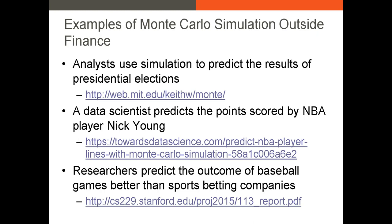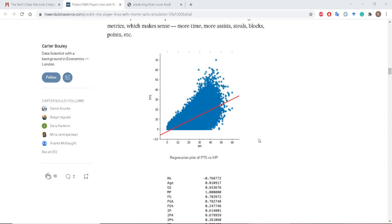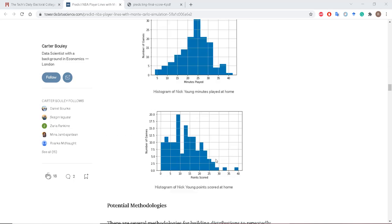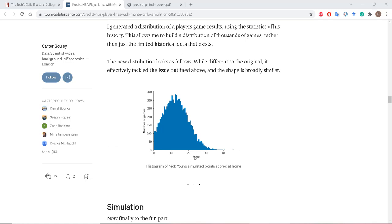Other researchers and analysts use Monte Carlo simulation to predict performance in sports. In one example, a researcher named Carter Booley uses data from basketballreference.com to run a regression of points on various factors that could affect points per game. He uses the regression coefficients in his model to predict the points per game scored by NBA player Nick Young. He treats Nick's minutes per game as a random variable and assigns a normal distribution to it. He then simulates Nick's minutes per game and uses the simulated value to predict Nick's points per game 10,000 times. The results are the histogram that you're looking at right now.